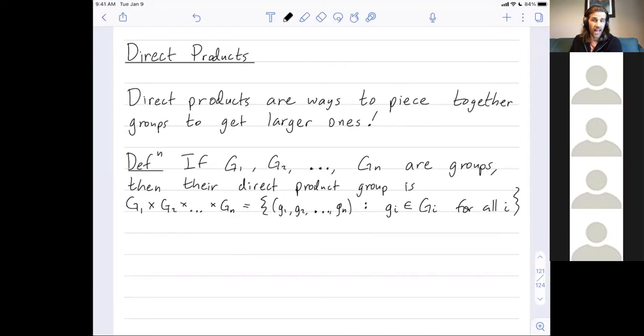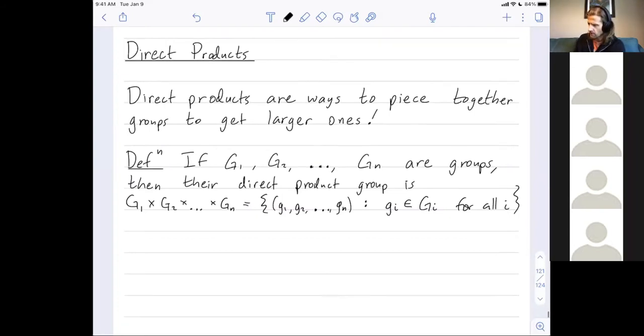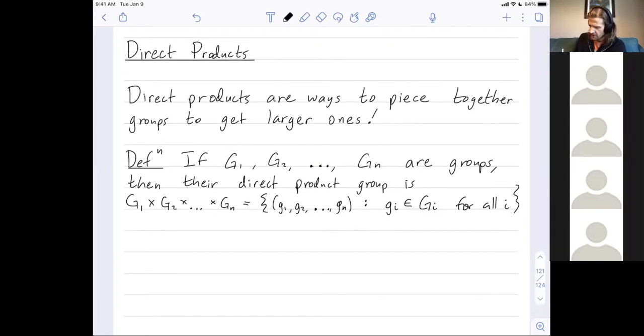That's just the elements of this group. I haven't told you how to multiply two elements yet. Already, you can see what the size of this group is. The size of this product is the product of the sizes.